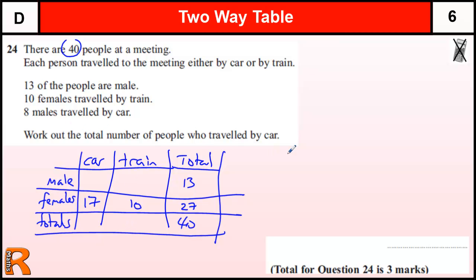And we're trying to work out the total number of people that travel by car. Once you've filled in the table you can answer any question on this. Eight males travel by car. So we've got eight males in a car. We could actually just finish that and go to 25 for total cars.